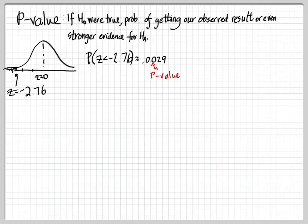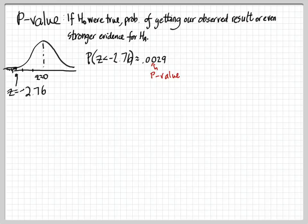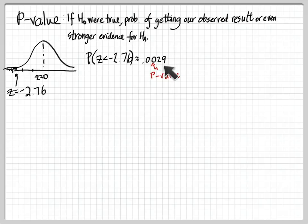The other choice we could make is: if the null were true, this would be very unlikely, so we're going to reject the null hypothesis. Because this would be so unlikely if the null were true, it seems reasonable to say maybe the null is not true any longer — maybe in fact the alternate is true. So the question becomes, how low is low enough? What's the small enough value to say this is unlikely enough and we're going to reject this null hypothesis?